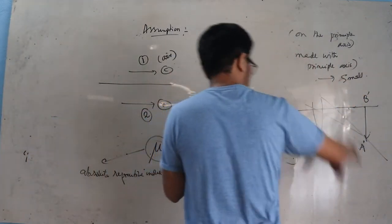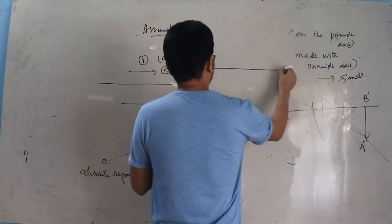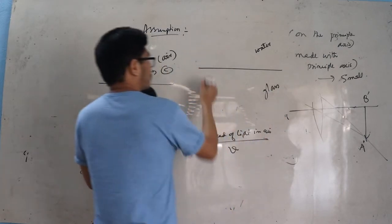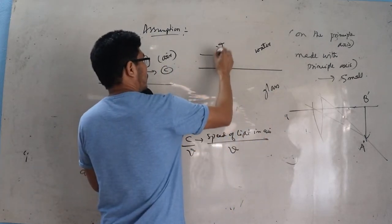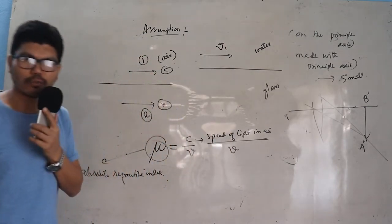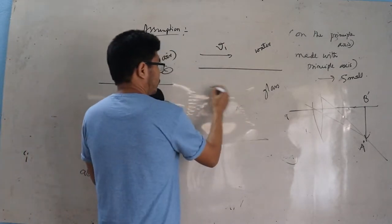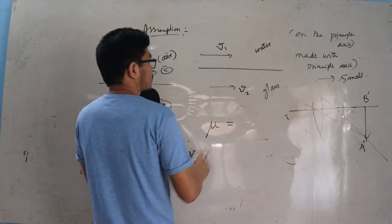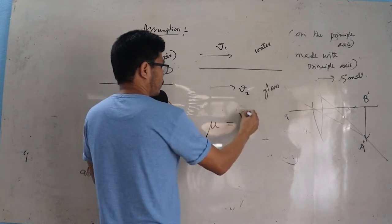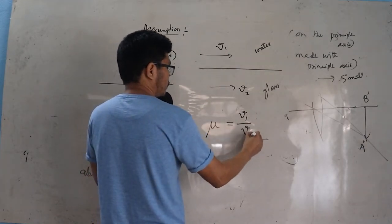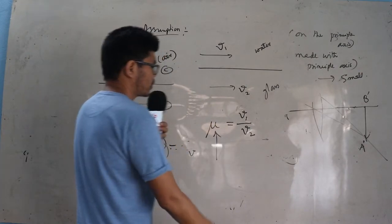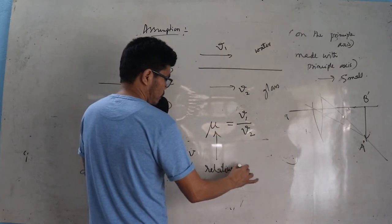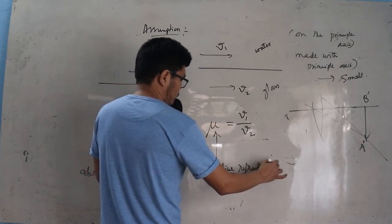On the other hand, if you have two media — say water and glass — let v1 be the speed of light in water and v2 be the speed of light in glass. Then the refractive index will be v1 divided by v2. In this case, this refractive index is called the relative refractive index, as long as one of the media is not air.